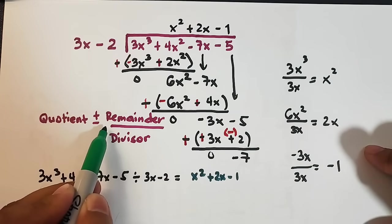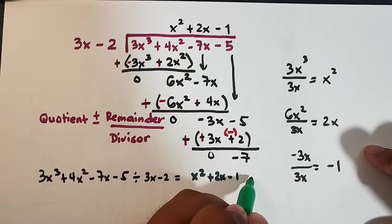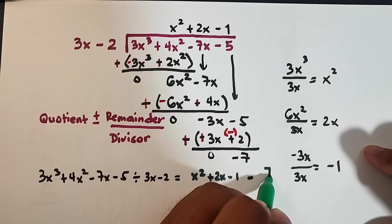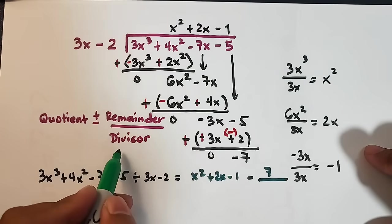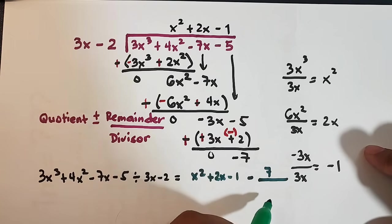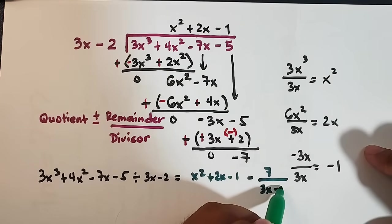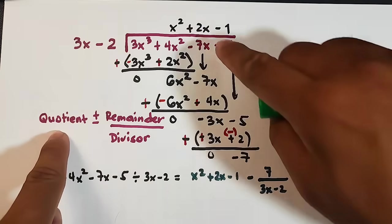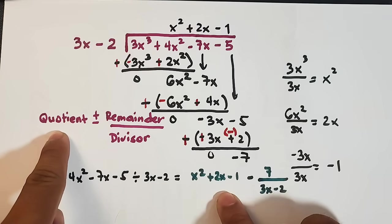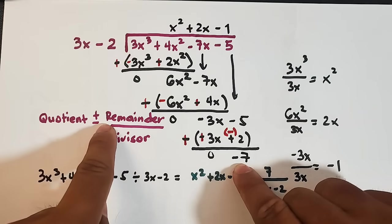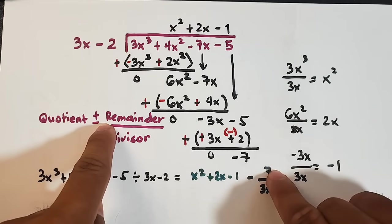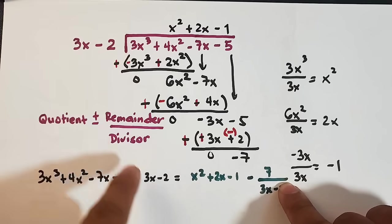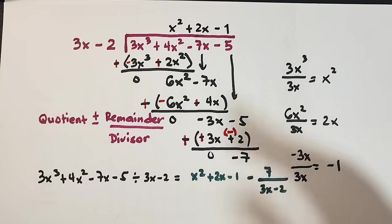This is it. Remainder first. Since our remainder is negative it will be negative 7 over your divisor. That is 3x minus 2. So again, this is the quotient. Since the remainder is negative. Minus 7 over your divisor which is 3x minus 2. So I hope guys you learned something from this video on how to do the long division in dividing polynomials.